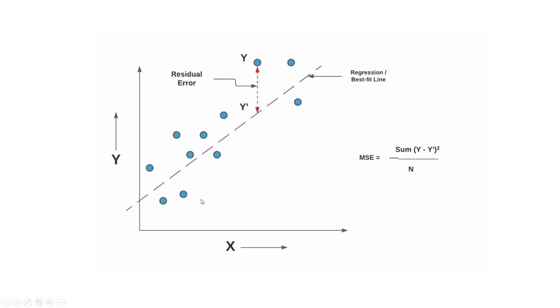These green dots are the original data and then this straight line is our best fitting line. If we draw a straight line from these dots to the straight line, we get the residual error.